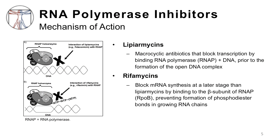First, we will cover the RNA polymerase inhibitors, consisting of two main classes of antibiotics: the lipamycins and the rifamycins. The figure on the left depicts the site of action of these two classes. At a very basic level, the lipamycins block transcription by binding to RNA polymerase and DNA prior to formation of the open DNA complex. However, specific details of this mechanism remain unknown.